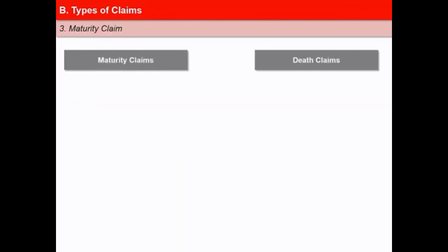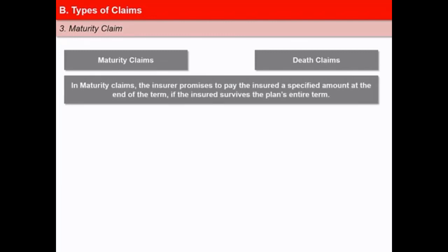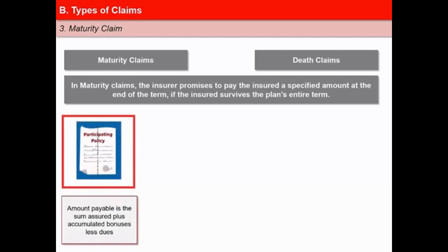Maturity claim and death claim are the types of claims whose payments are made at the end of the policy term as specified in the insurance contract. In maturity claims, the insurer promises to pay the insured a specified amount at the end of the term if the insured survives the plan's entire term. The maturity value of the policy depends upon the type of policy taken. In the case of a participating plan, the amount payable under maturity claim is the sum assured plus accumulated bonuses, less dues such as outstanding premium, policy loans and interest thereon.